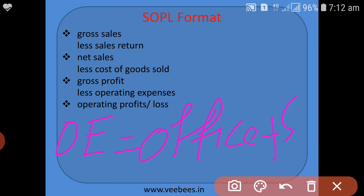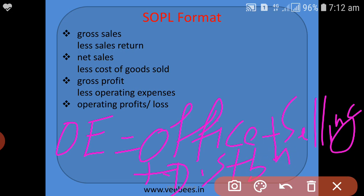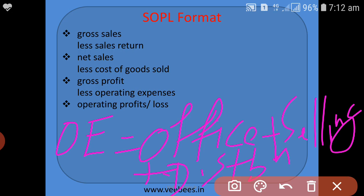Operating expenses also include selling expense and distribution expense. These three — office expense, selling expense, and distribution expense — are the operating expenses.